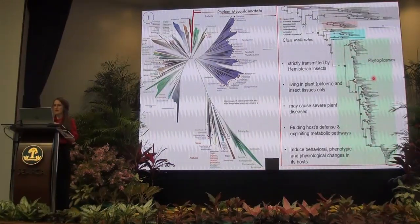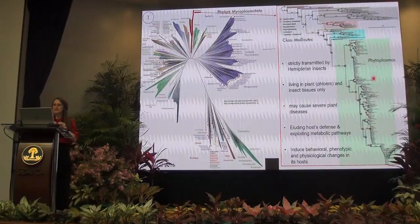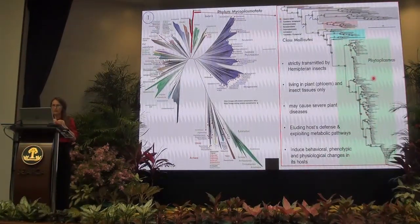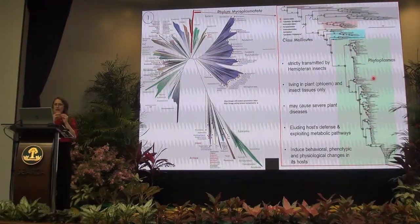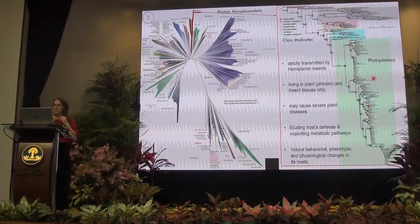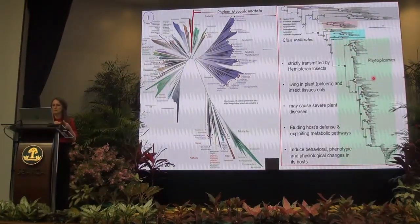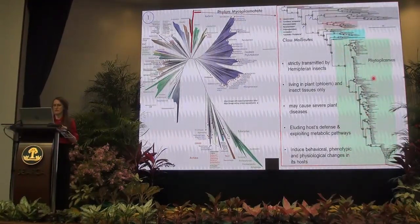Some facts: we know phytoplasmas are transmitted by insects and they are obligate — they live exclusively in phloem and insect tissue only. They induce severe chronic diseases, and most importantly they are able to induce host defense responses, exploiting metabolic pathways of the host, and they induce behavioral, phenotypic, and physiological changes in the host.